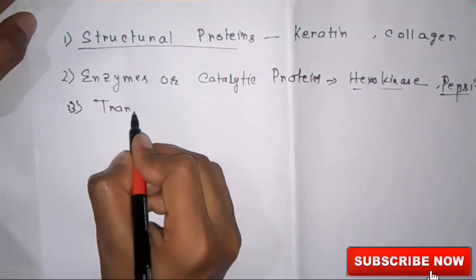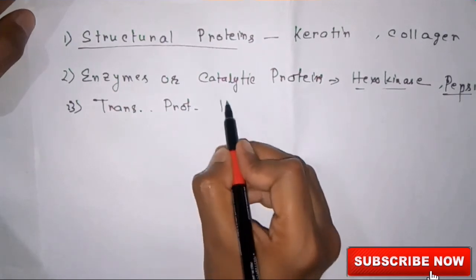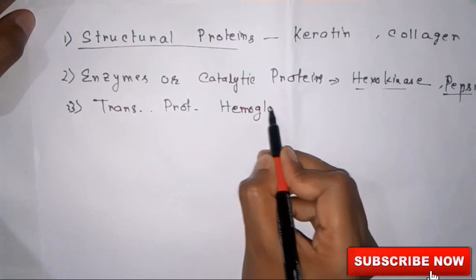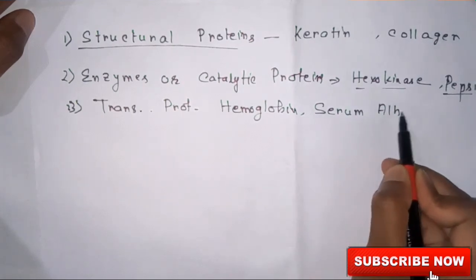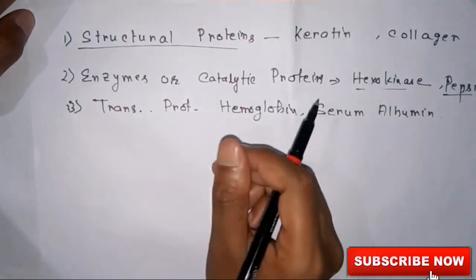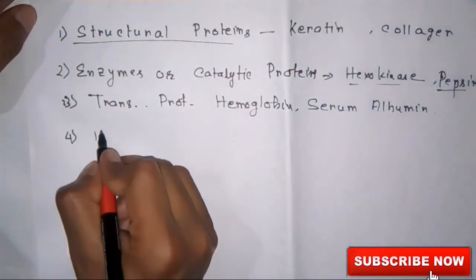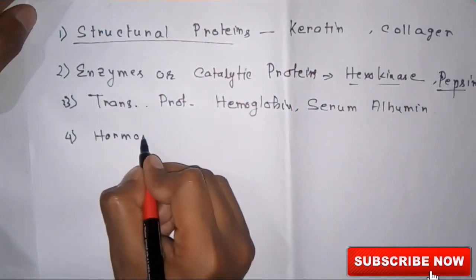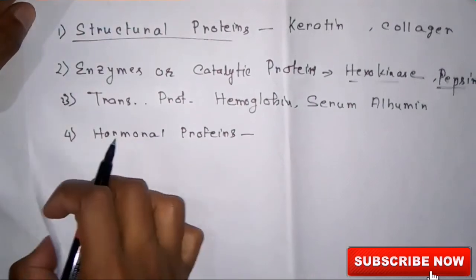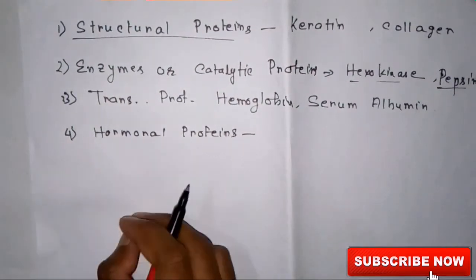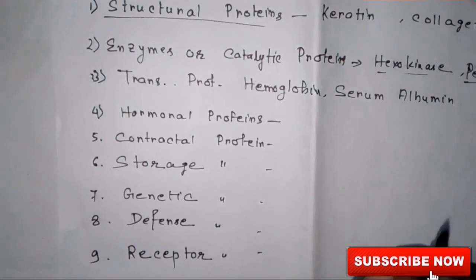Number four, hormonal proteins — that is insulin and growth hormone. Number five is contractile proteins, that is actin and myosin.